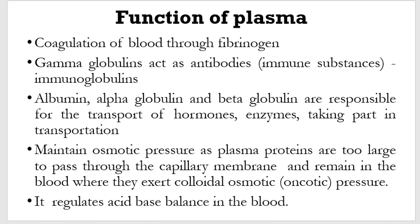This slide further exemplifies the functions of plasma before we delve into blood itself. We're talking mainly about coagulation and the steps involved in it. It also has some immune substances as well as proteins responsible for transportation. It is also very vital in maintenance of osmotic pressure, as plasma proteins are too large to pass through the capillary membrane, so they remain in the blood where they exert oncotic pressure and ensure that not much water is released from the blood into the tissue. It also regulates the acid-base balance of the blood.